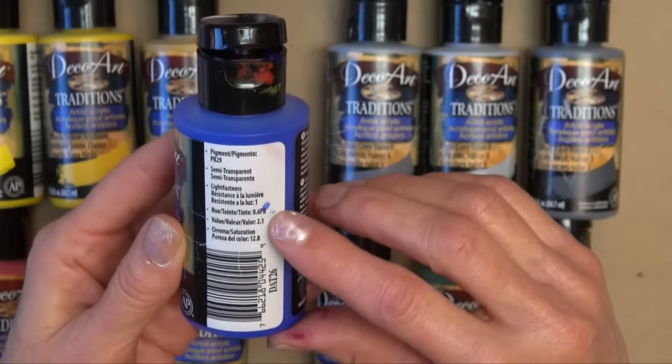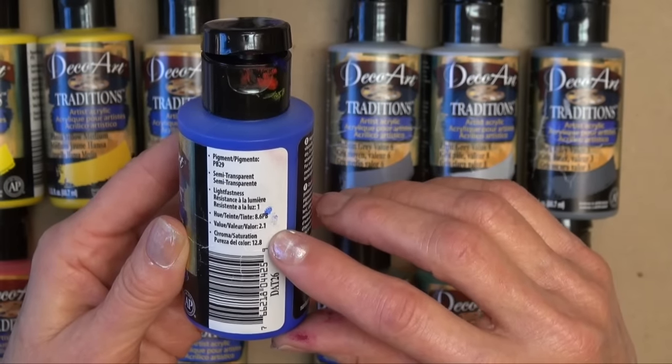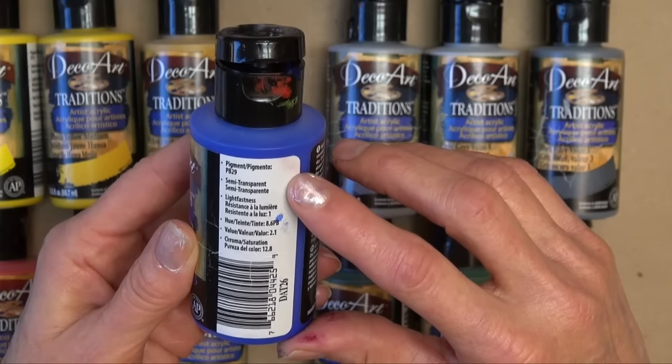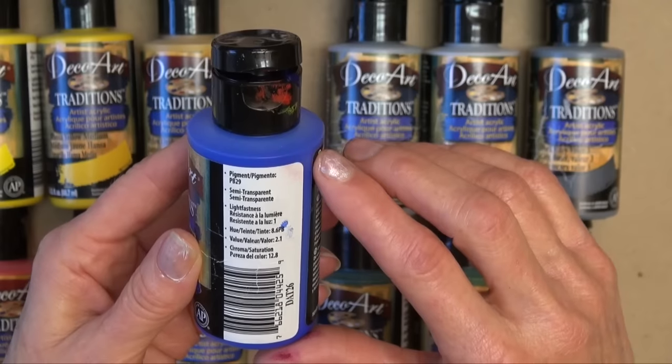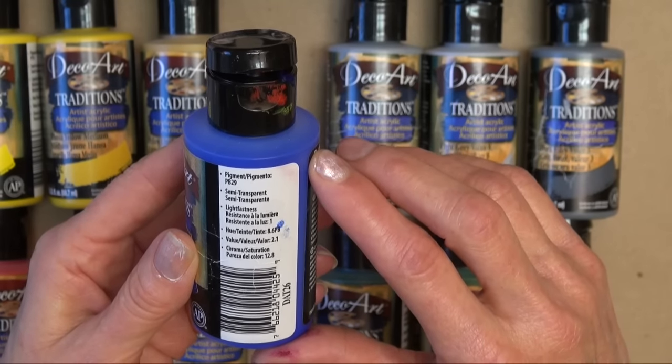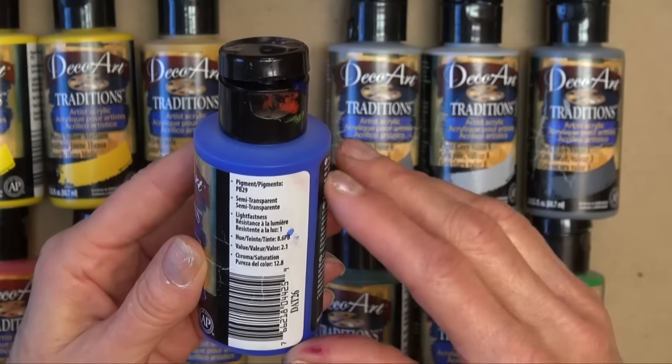On the label, you'll find some interesting and important information on each bottle. For instance, this ultramarine blue is a PB29, which means pigment blue 29. Now the 29 is an index number. It's how they file colors and pigments.